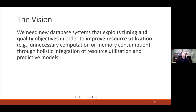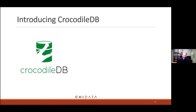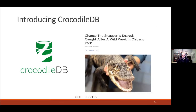The vision for CrocodileDB is to build a new system that exploits timing and performance objectives to improve resource utilization, done through a couple of mechanisms. The name is inspired by how a crocodile sits very still until it attacks — then pounces very fast at the last minute. It doesn't chase — it's efficient. Pre-pandemic, there was a snapper running around a Chicago park that helped inspire naming this CrocodileDB.